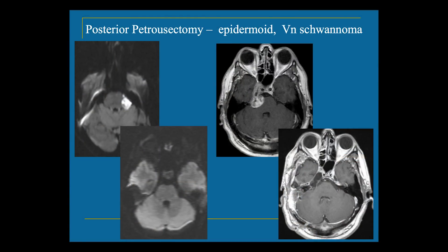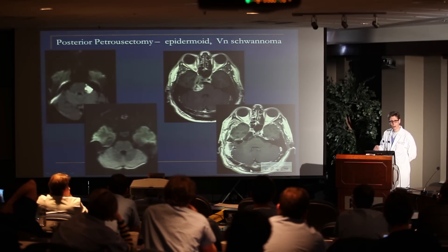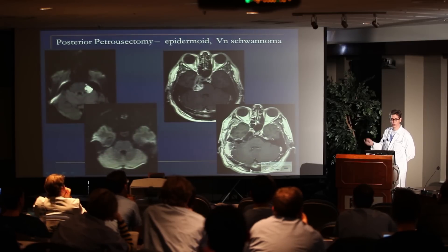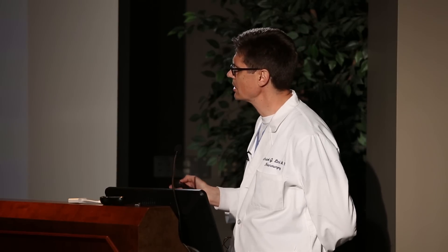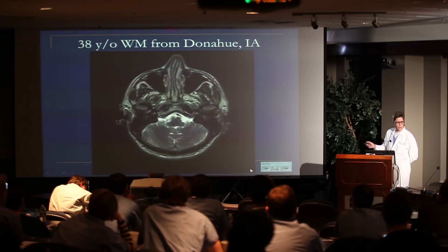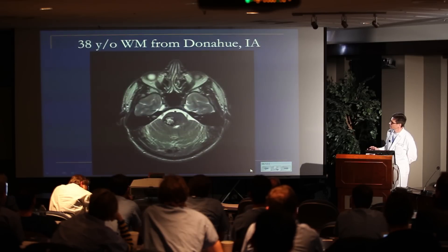Other tumors I think are really good for posterior petrosectomy: epidermoids, trigeminal schwannomas — when you want to work in both the posterior fossa and middle fossa. There's the post-op showing you can open up Meckel's cave, as Carl showed this morning. And then this is a pathology that lends itself really well to the posterior petrosectomy approach — a cavernous malformation in a patient from a small town in Iowa.